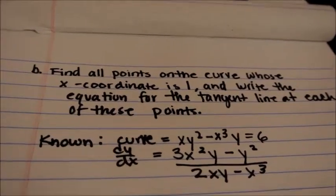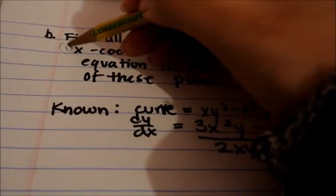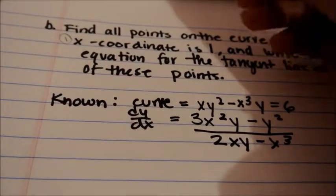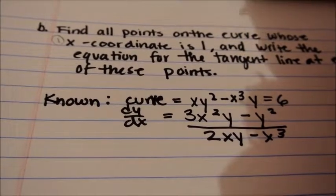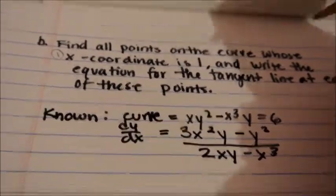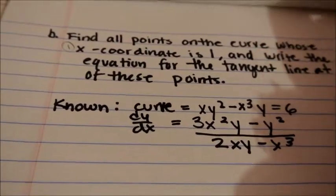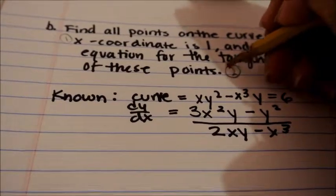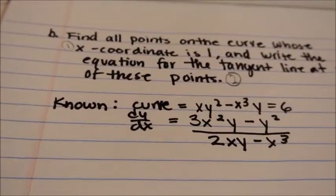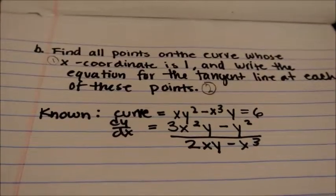Now, this question is a two-part question. We have to find the coordinates, the x-coordinate and y-coordinate. So, x-coordinate is 1, and we have to find the y-coordinate of these points on the curve. And we have to write the equation for the tangent line at each of these points. We have to write two equations.